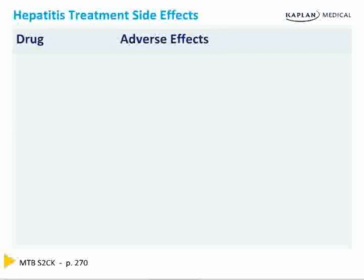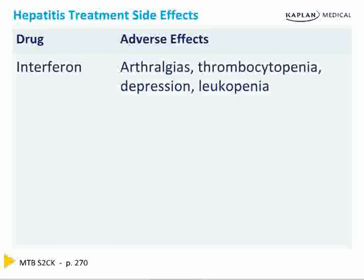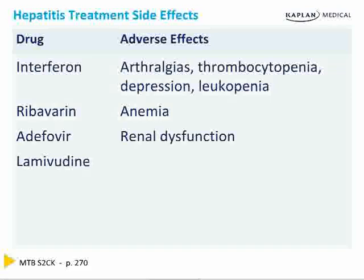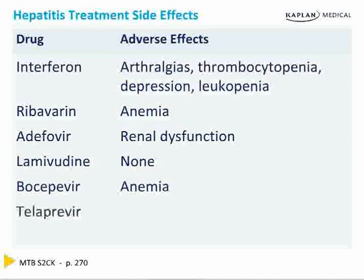There are many adverse effects to hepatitis treatment, and many patients say in the short term the adverse effects are worse than the disease itself. Interferon gives arthralgias, thrombocytopenia, severe depression, and leukopenia. Ribavirin gives anemia — one of the most common findings. Adefovir gives renal dysfunction. Lamivudine has no adverse effects. Boceprevir gives anemia, and telaprevir gives a rash. Both ribavirin and boceprevir cause anemia, so it will be augmented in hep C patients.